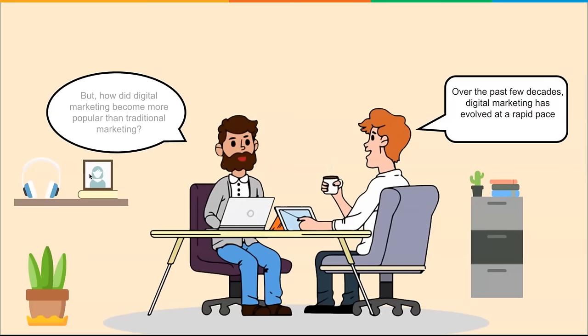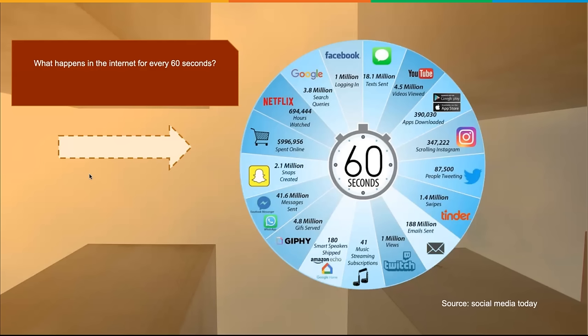Over the past few decades, digital marketing has evolved at a rapid pace. These days, a lot of people spend most of their time on the internet. So what happens on the internet every 60 seconds?